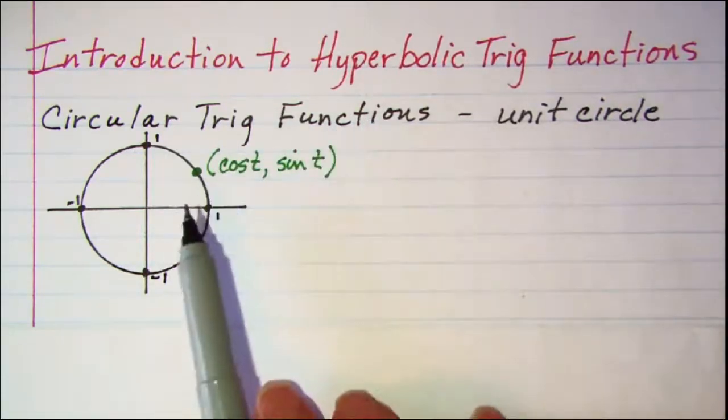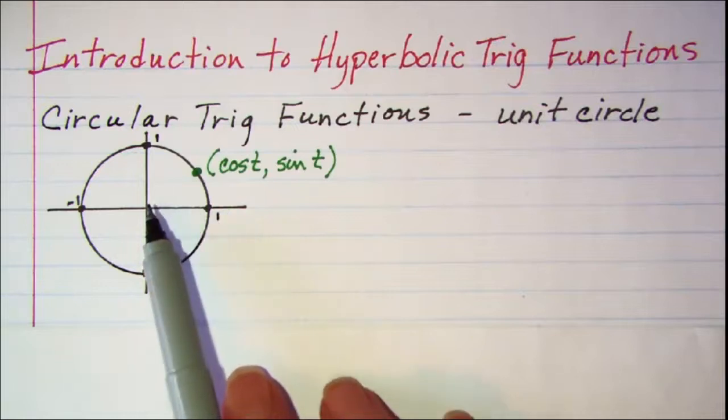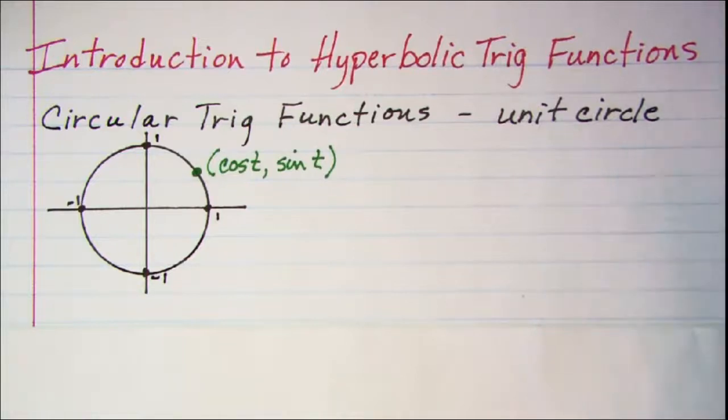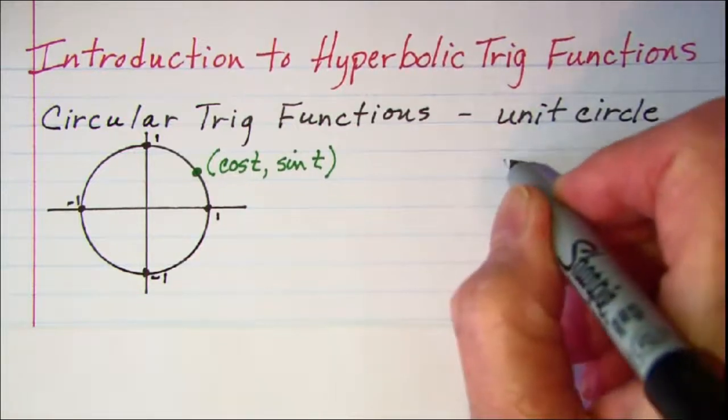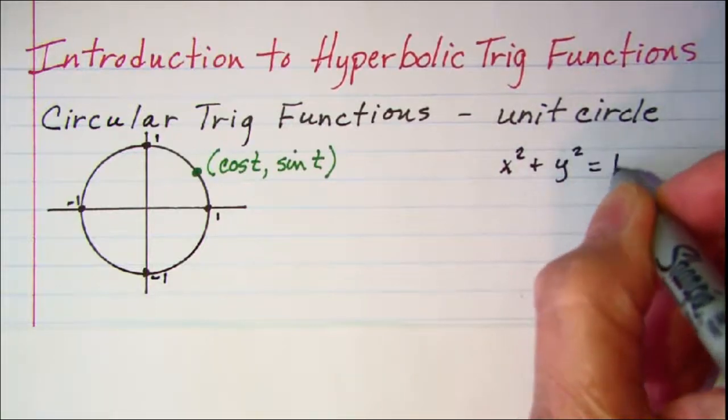I've shown a graph of the unit circle. Remember the unit circle has a radius of 1 and it has its center at the origin. So my unit circle has an equation x squared plus y squared is equal to 1.